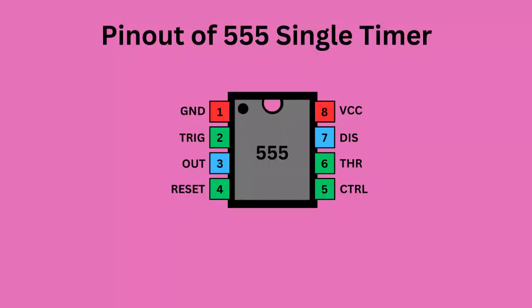The 555 timer IC comes with eight pins. There is a notch or a dot on the chip's body. Pin 1, located at the top left, serves as the ground or ground supply. Pin 2, the trigger pin, initiates the timing interval in mono-stable and astable modes.